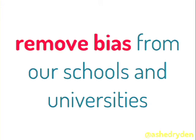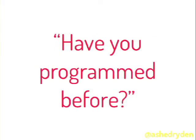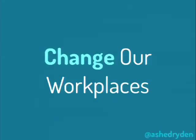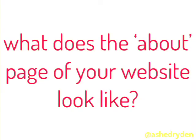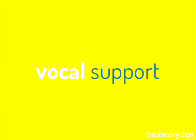We can start removing bias from schools and universities. Harvey Mudd doubled the number of female CS grads by doing one thing — asking 'Have you ever programmed before?' and putting those who hadn't in a separate 101 class, so they didn't feel like everyone else already knew everything. We can change our workplaces — think about what your company's about page looks like. Is it all white guys? We can't expect to attract diverse communities if all the higher-ups in our businesses are straight white men.